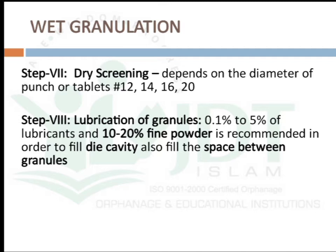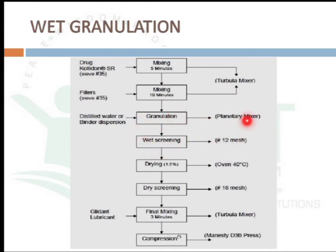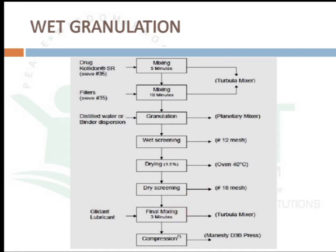The full wet granulation procedure: take the active pharmaceutical ingredients, diluents, and part of the disintegrants and mix using a turbular mixer for 5 minutes. Add fillers and mix for 10 minutes. Using distilled water and binder dispersion, granulate using a planetary mixer. Wet screen through 12-mesh sieve. Dry in an oven at 40°C or less than 60°C. Dry screen with sieve number 18. Final mixing — add glidants, lubricants, and the major portion of disintegrants. Then go for compression.